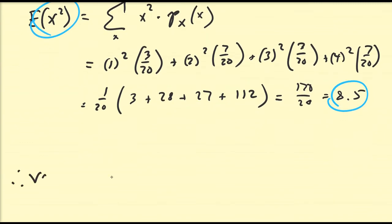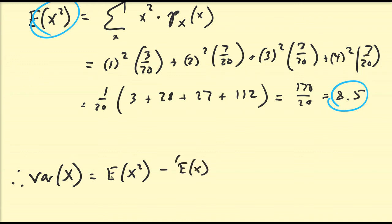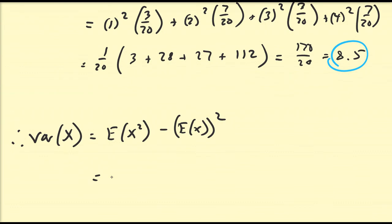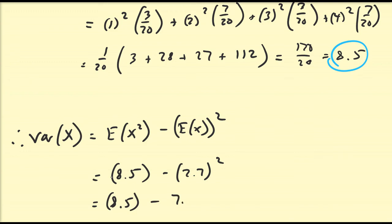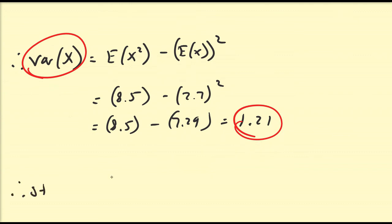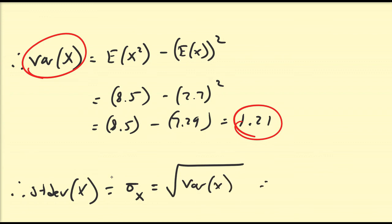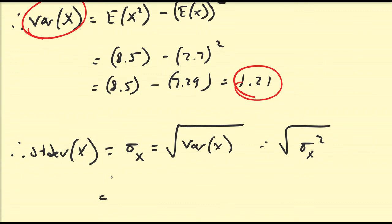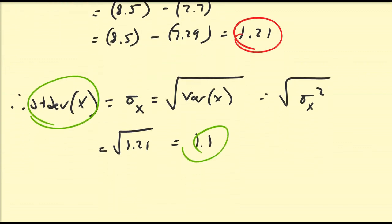From here, the variance of x — more precisely a property, though it can be used as a definition — is the second moment minus the mean squared. So Var(x) = 8.5 − (2.7)² = 8.5 − 7.29 = 1.21. We can go a step further and calculate the standard deviation: sigma_x = sqrt(Var(x)) = sqrt(1.21) = 1.1. So the standard deviation of random variable x is 1.1.